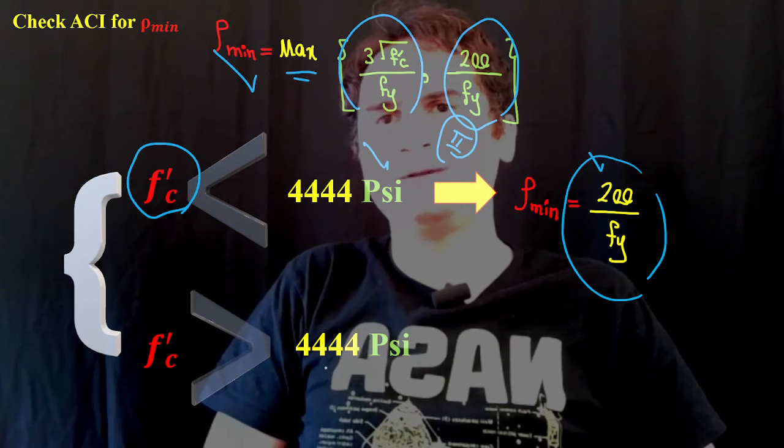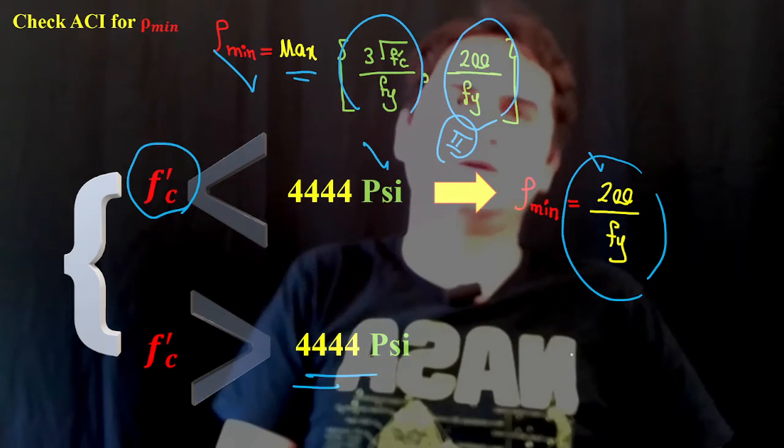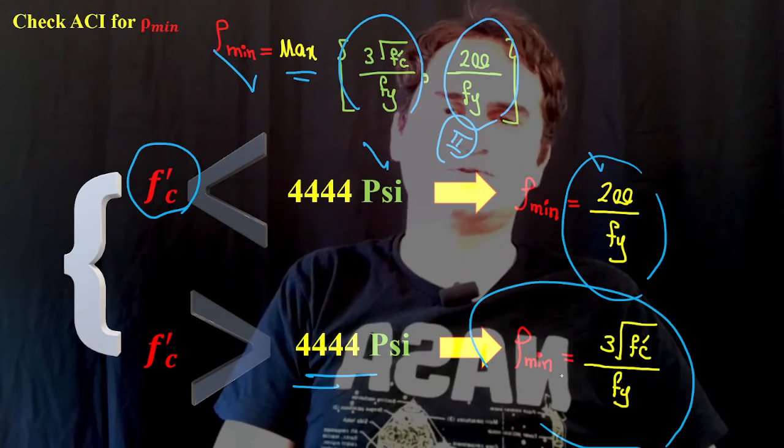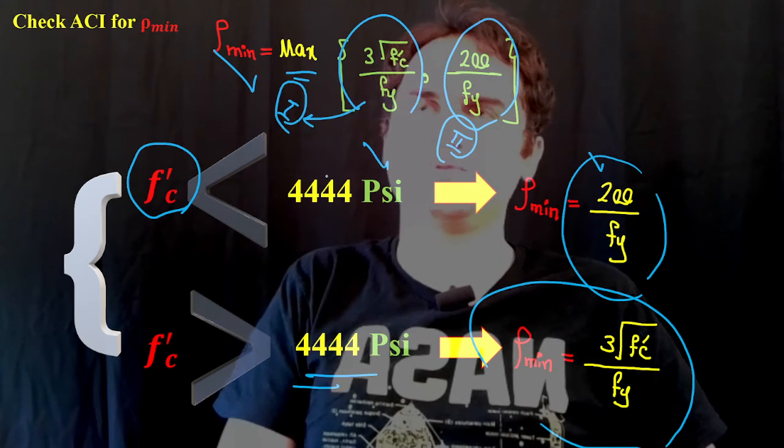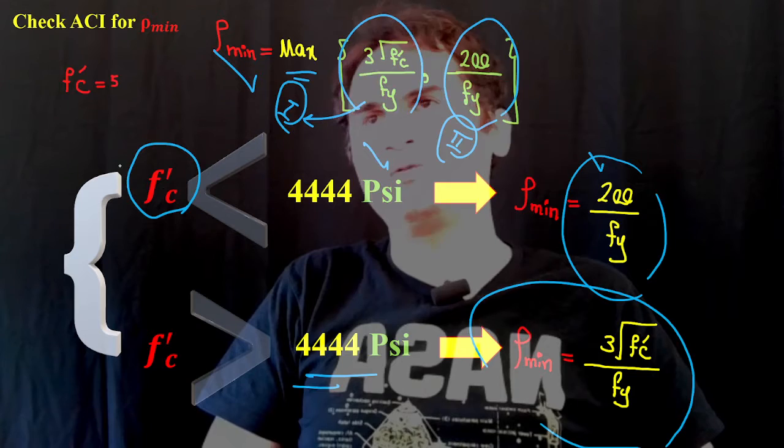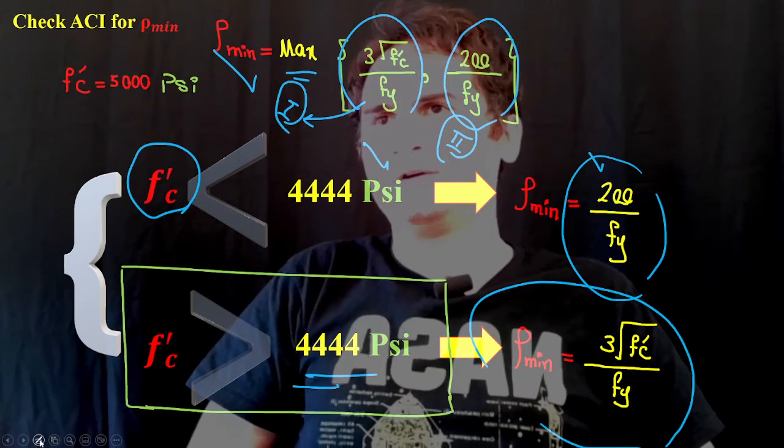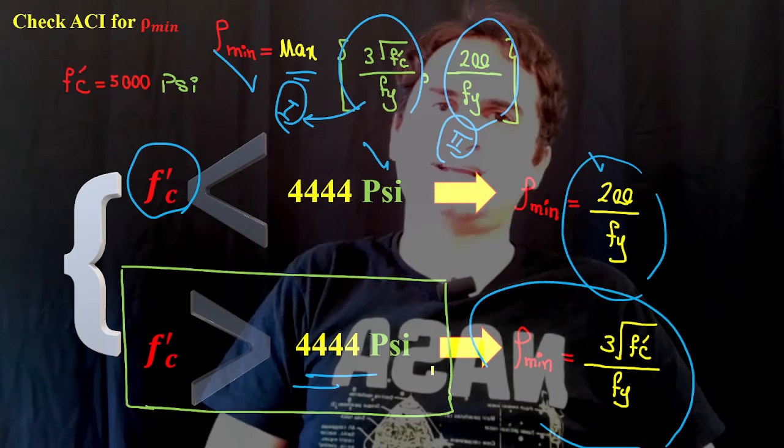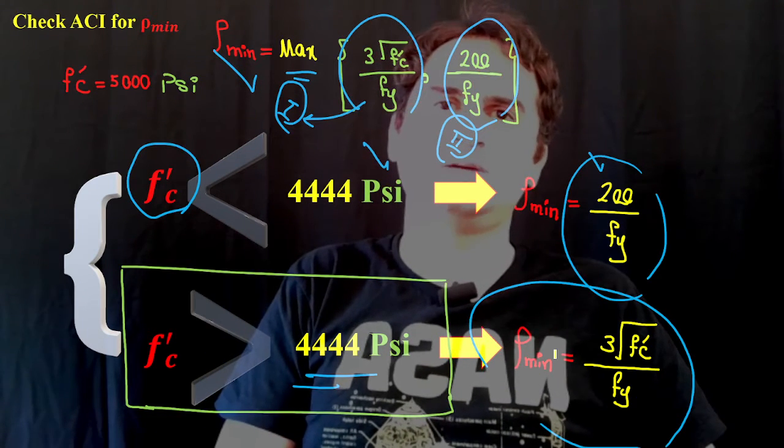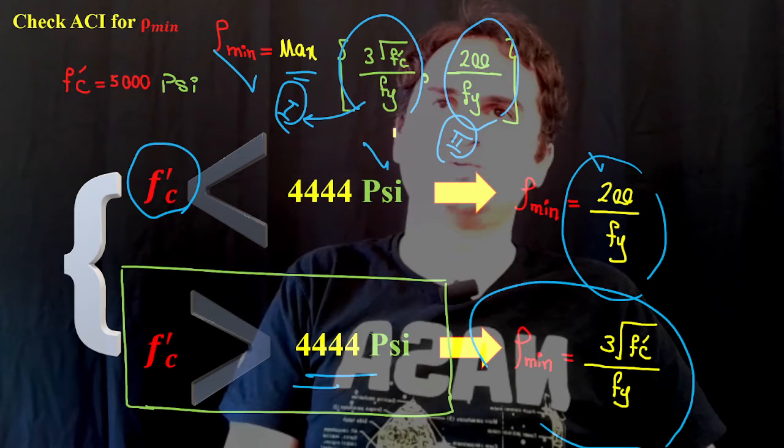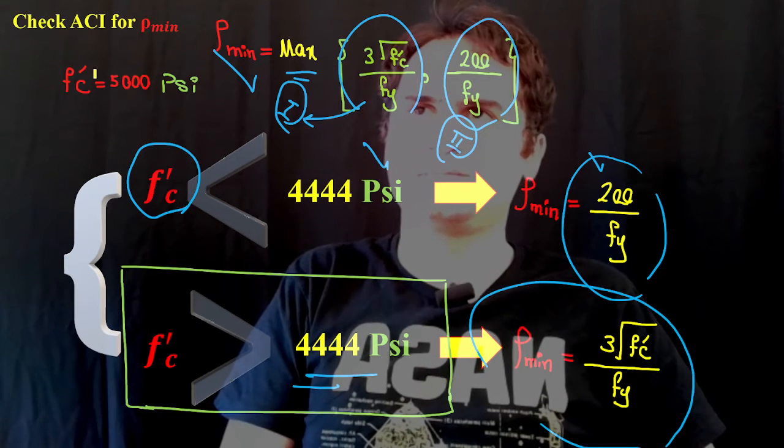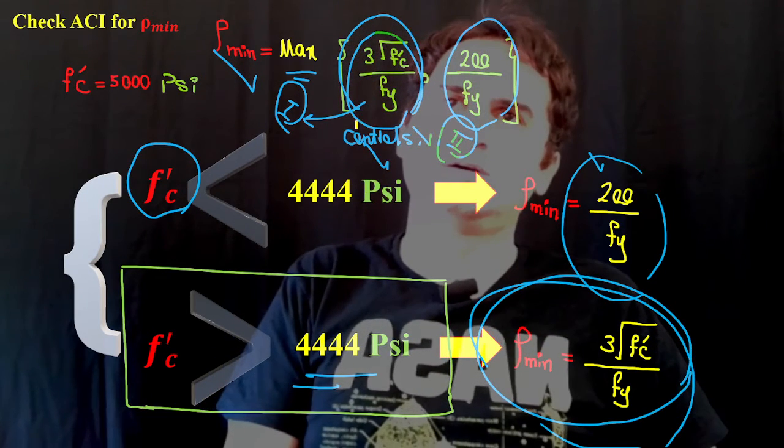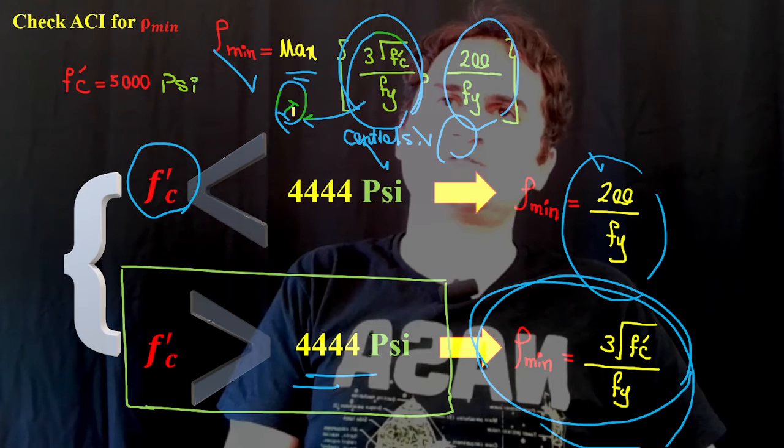And if f'_c is bigger than 4,444, rho minimum is controlled by the first part of the equation. In our case, f'_c is equal to 5,000, which is higher, so this part is the controlling part. The first equation controls.